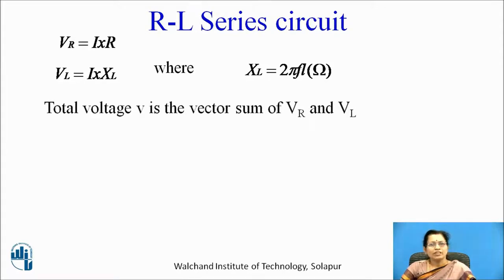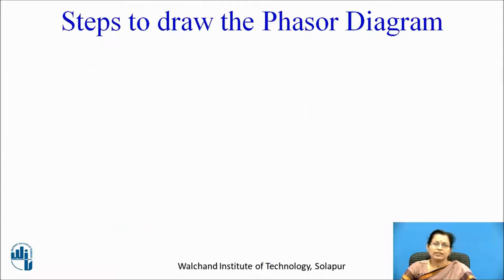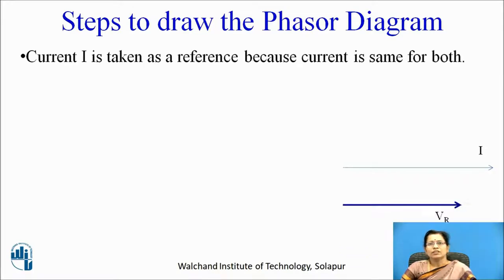Total voltage V is the vector sum of Vr and Vl, calculated as V equal to Vr plus Vl. For a resistive circuit, voltage and current both are in phase, and for an inductive circuit, current is lagging the inductive voltage by 90 degrees. To draw the phasor diagram, first draw the current vector. Current I is taken as a reference because current is the same for both resistor and inductor.